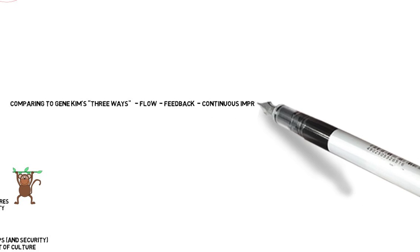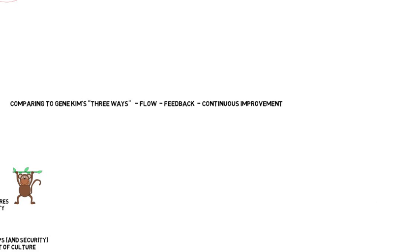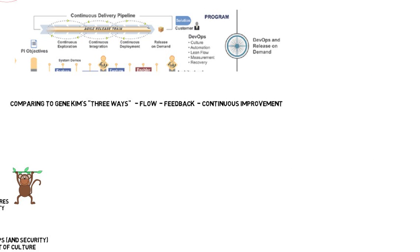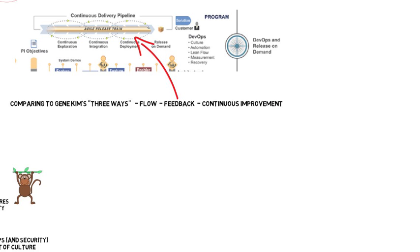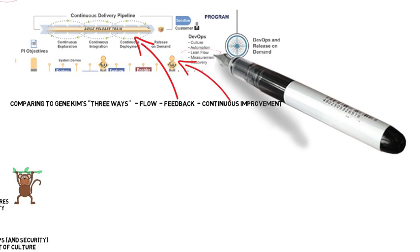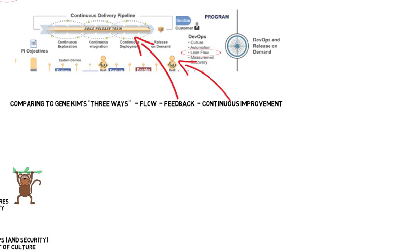Now let's take a look at Gene Kim's three ways in comparison to Scaled Agile: flow, feedback, and continuous learning. Zooming in on the Scaled Agile DevOps component at the program level, we can see flow in the idea of lean flow, feedback incorporated into the continuous delivery pipeline with feedback loops, and continuous improvement built into Scaled Agile through inspect and adapt — which is really a program-level retrospective. Lean flow represents the idea of flow throughout the entire CALMER approach in Scaled Agile DevOps.